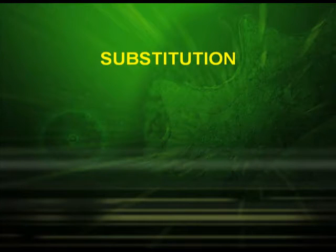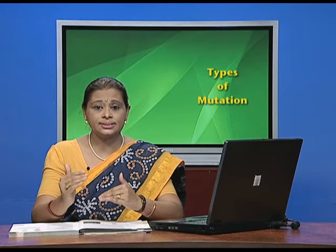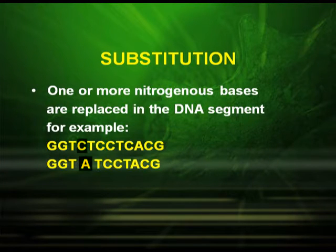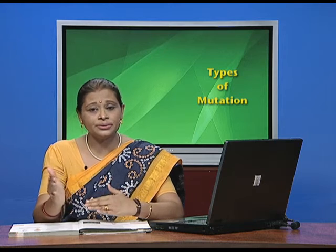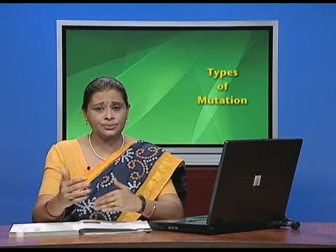Now let us have a very common type of mutation called substitution, where one or more nitrogenous bases are replaced in the DNA segment. Again, the hypothetical DNA sequence is G, G, T, C, T, C, C, T, C, A, C, G. Here, C is replaced by A after G, G, T. So the reading frame becomes G, G, T, A, T, C, C, T, A, C, G — the whole reading frame changes and we get an abnormal protein that results in a mutation.